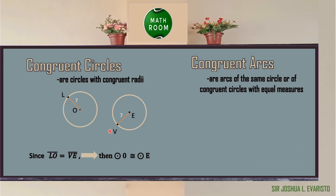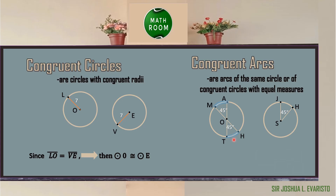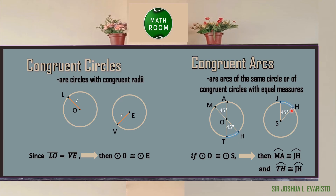Moreover, congruent arcs are arcs of the same circle or of congruent circles with equal measures. In the given figure, arc MA is congruent to arc TH since they have the same measure — they are both 45 degrees. Also, if circle O is congruent to circle S, then we can conclude that arc MA is congruent to arc JH, and arc TH is congruent to arc JH.